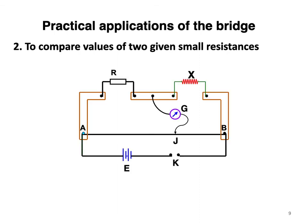Another practical application: to compare the value of two given small resistances, let's call them X1 and X2. Circuit is same - read X as X1. Here we use one of the two resistances first and calculate X1, that is, we find the position of the null point.